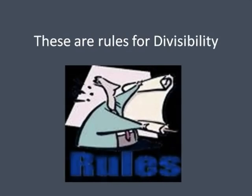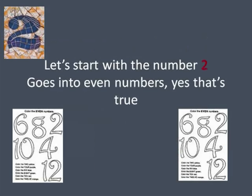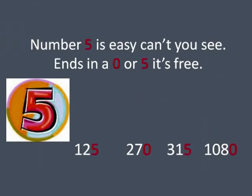These are rules for divisibility. These are rules you divide with ease. Let's start with the number two into even numbers. Yes, it's true. Number five is easy, can't you see? Ends in zero or a five, it's free.